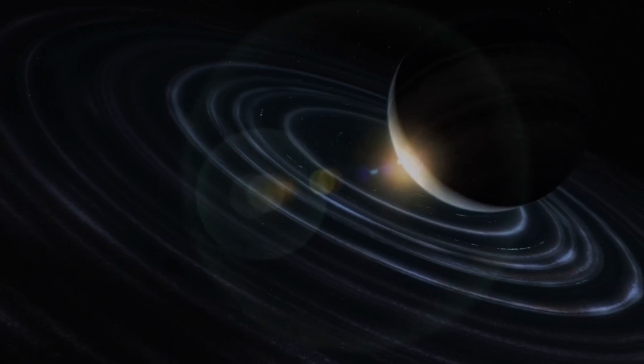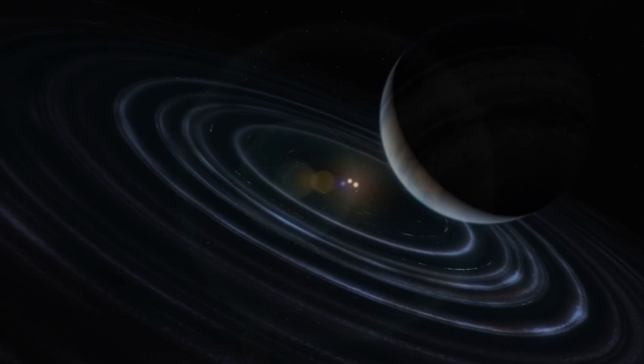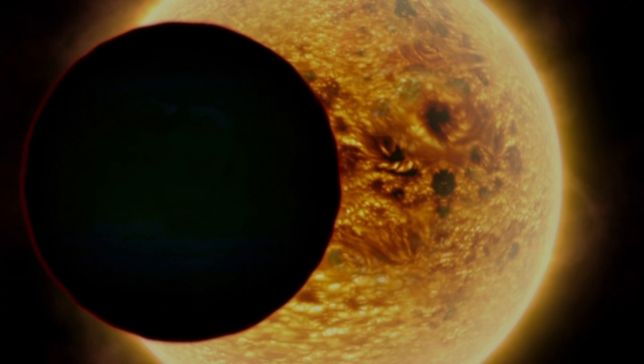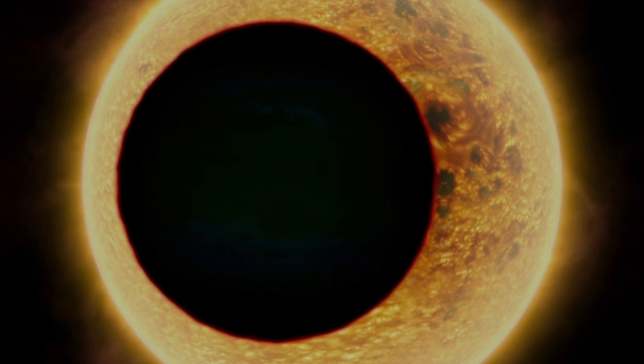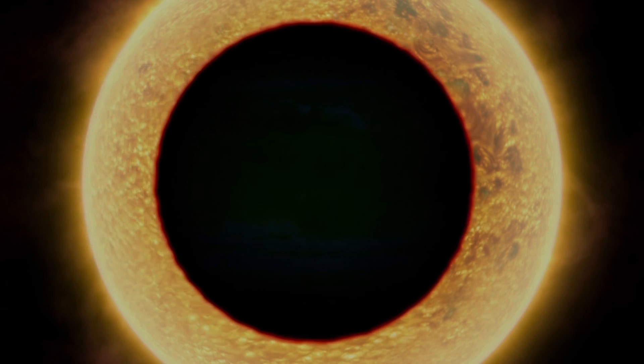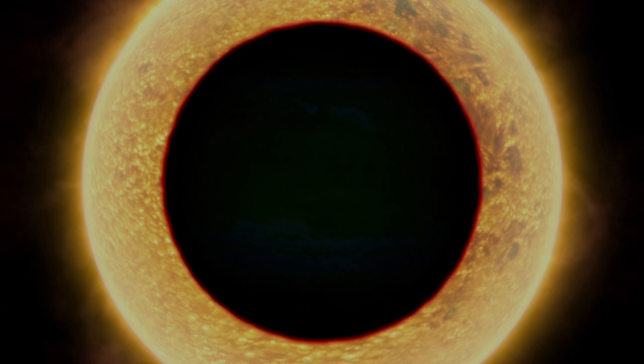This planet orbits pretty close to its host star. The distance at which this planet orbits its star is about 4% the distance from our Sun to Earth, so it has a radius of about 0.04896 AU. One AU is about the distance from Earth to Sun.